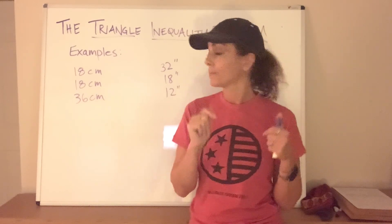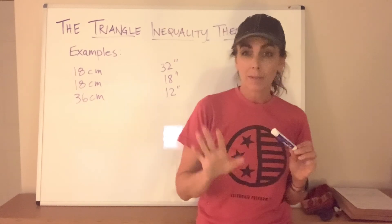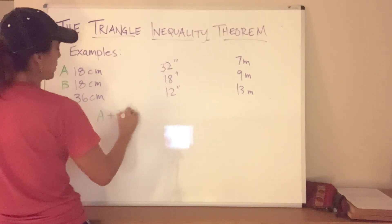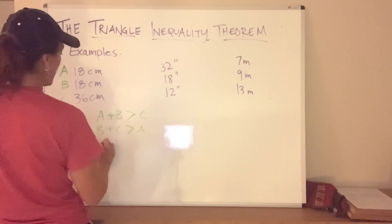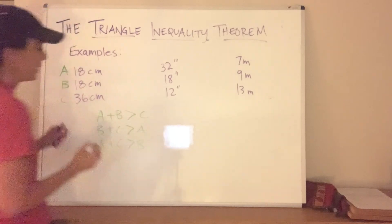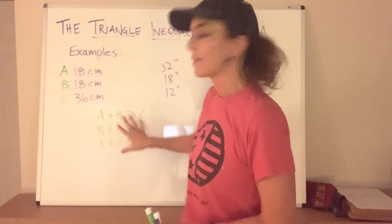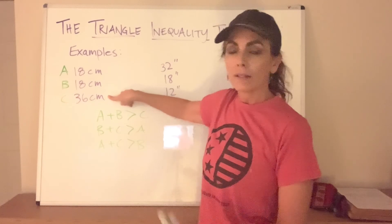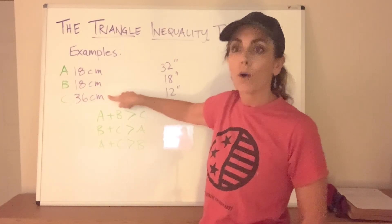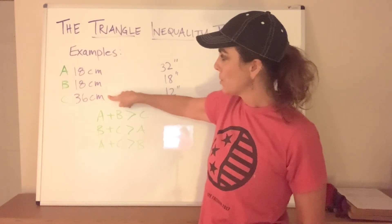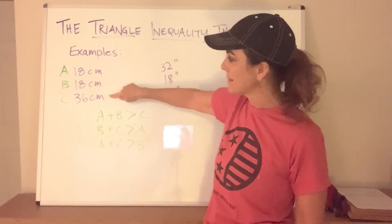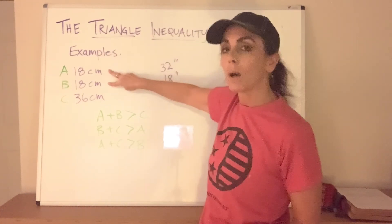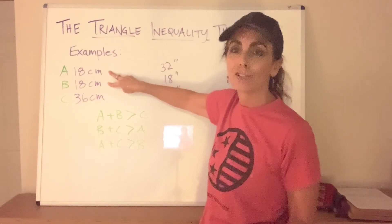First example — let's name the sides A, B, and C. We need to check: is A + B > C? Is B + C > A? And is A + C > B? Looking at the first check, A + B is not greater than C — that's a definite no. We can stop right there and say this will not make a triangle. Just for completeness, B + C is definitely greater than A and A + C is definitely greater than B, but that first failure is enough to reject these side lengths.